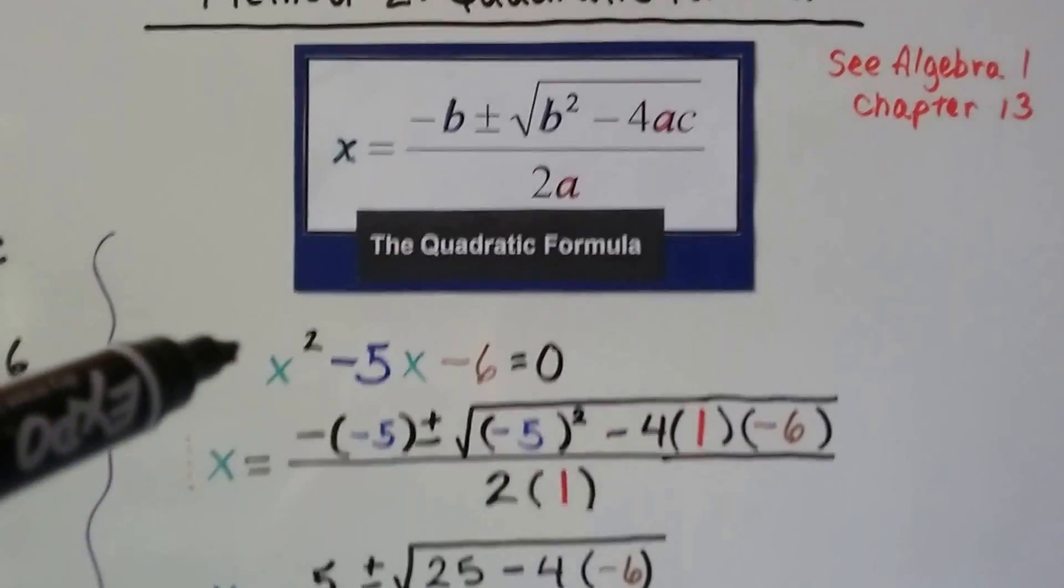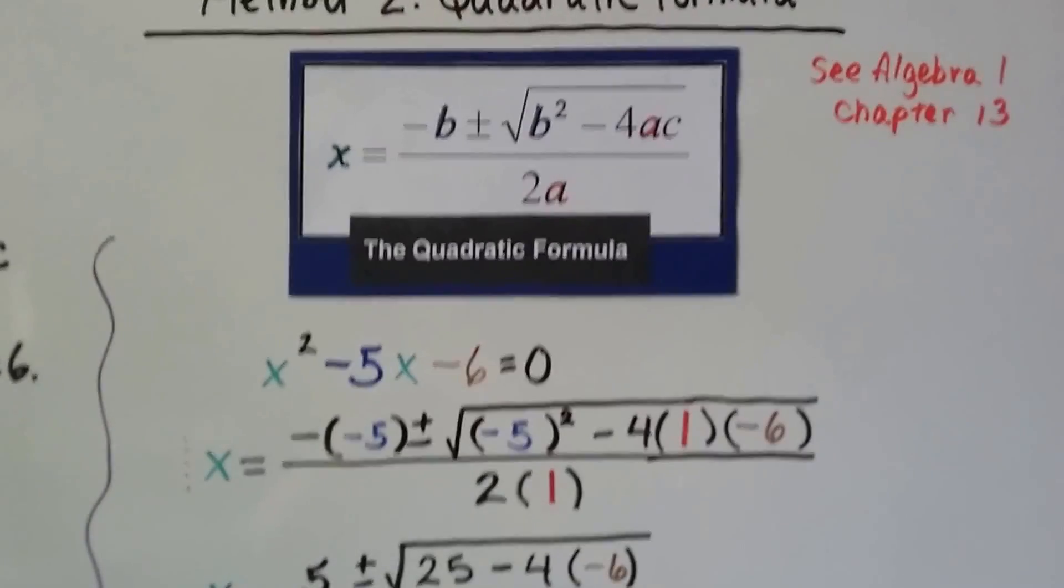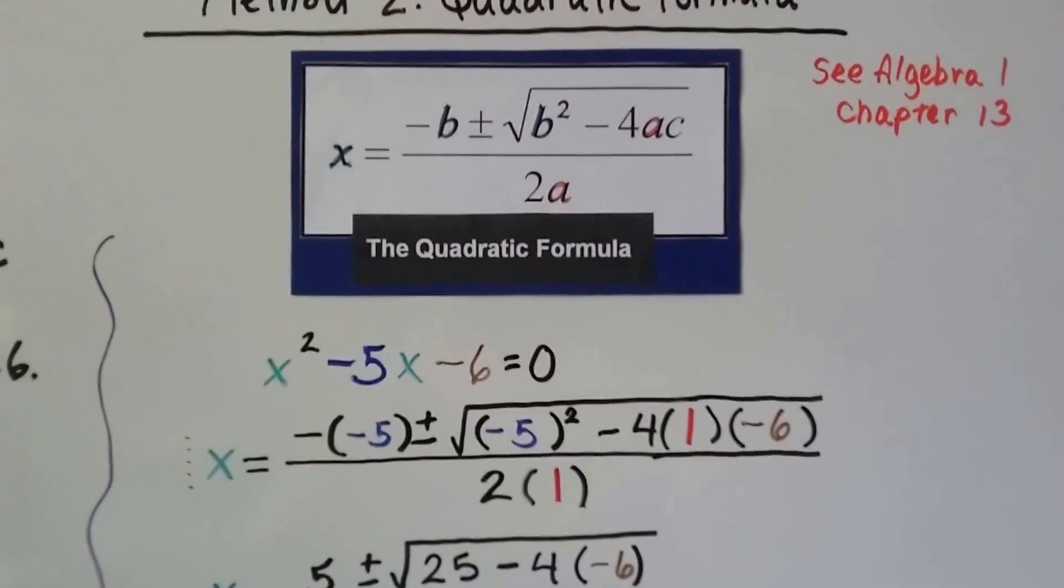We're going to substitute those values into the quadratic formula. This is a, there's an invisible 1 here. And b would be -5, c would be -6.